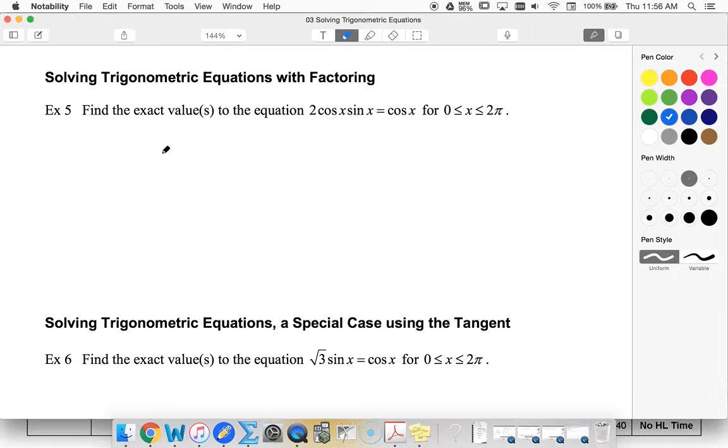So I'm going to take this equation and set it equal to zero. Minus cos x equals zero. And now I'm going to factor out my cos x because I know how to solve equations that are factored.